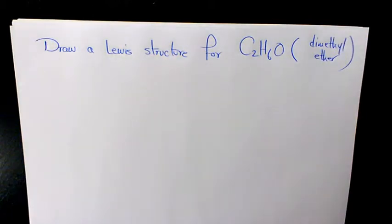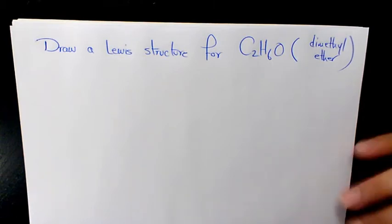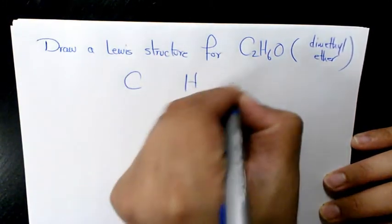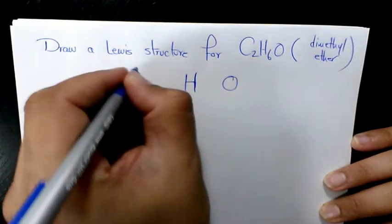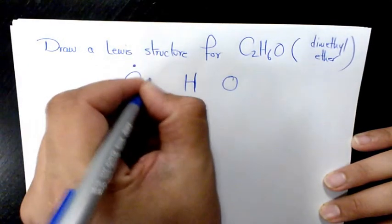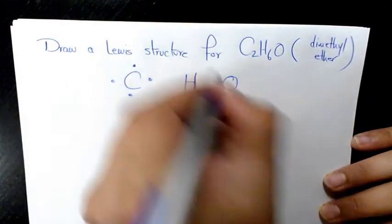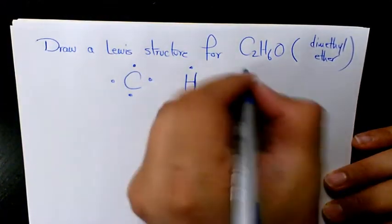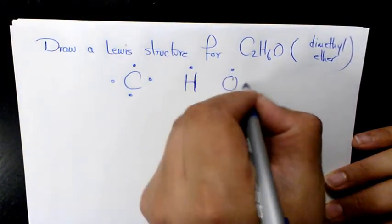What's up guys, this is Massey, welcome to another video. In this video I want to show you how to draw the Lewis structure for C2H6O, or dimethyl ether. So we have carbon, hydrogen, and oxygen. Carbon has four valence electrons, hydrogen has one valence electron, and oxygen has six of them.